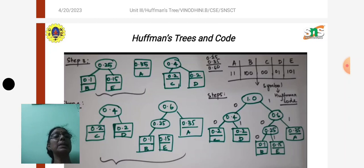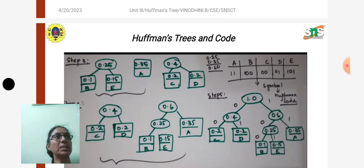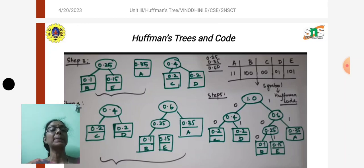Suppose the question asks to find the code for the sentence 'bad'. For b the code is 100, for a the code is 11, and for d the code is 01. So the sentence 'bad' will be encoded as 1 0 0 1 1 0 1. This is how, based on these procedures, we can create the code for any symbols. I hope you understand this concept. Thank you.